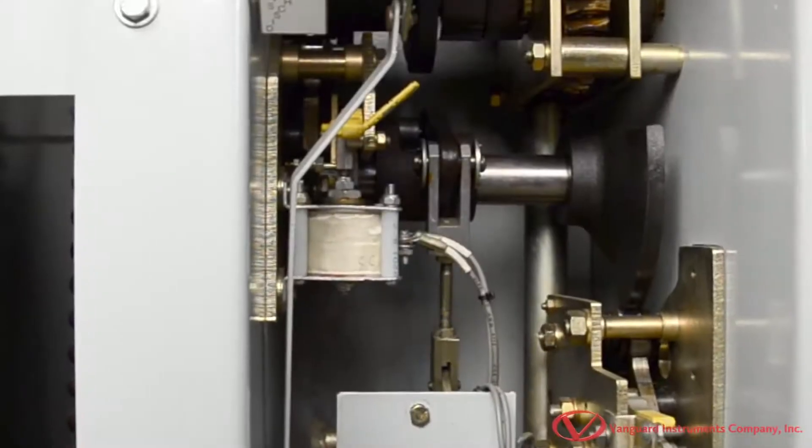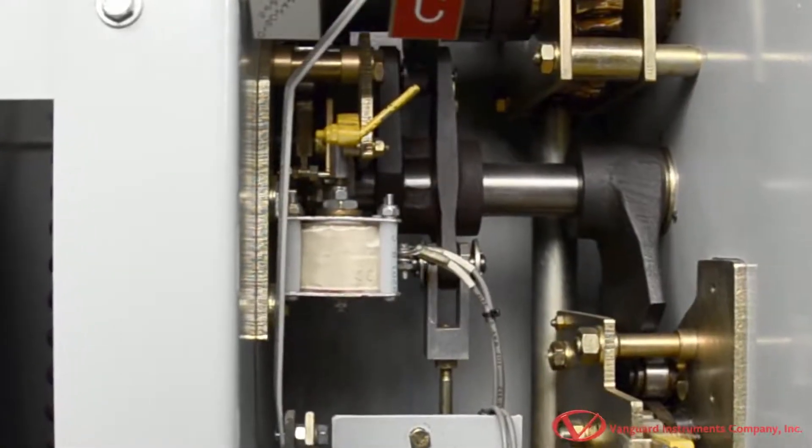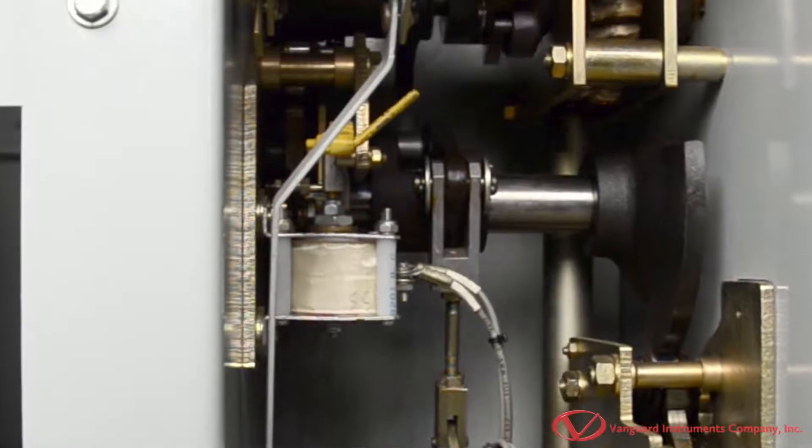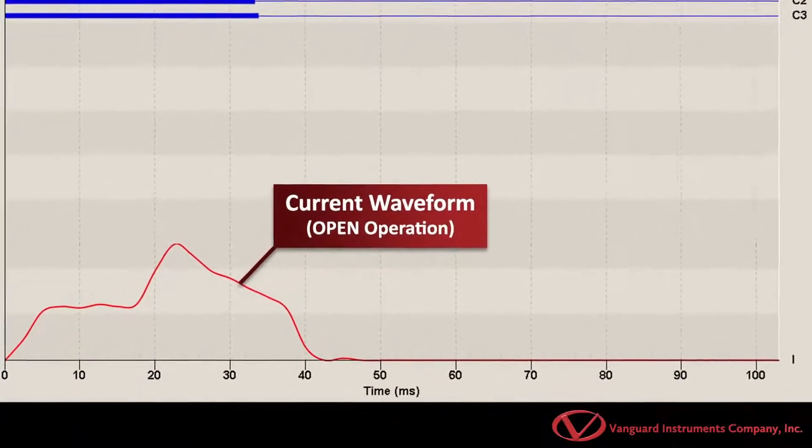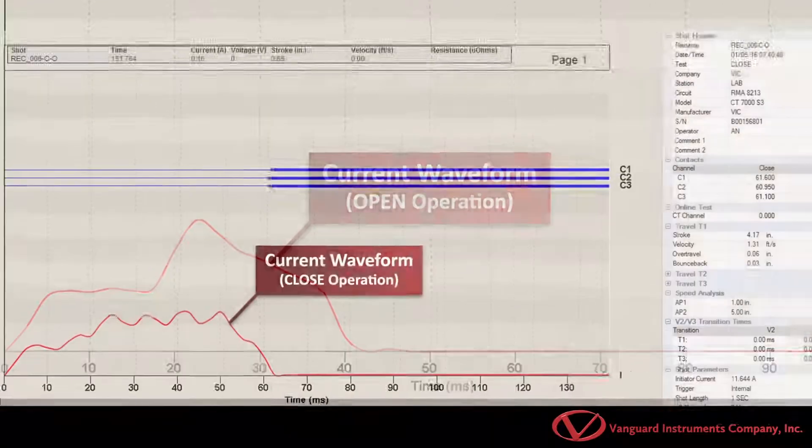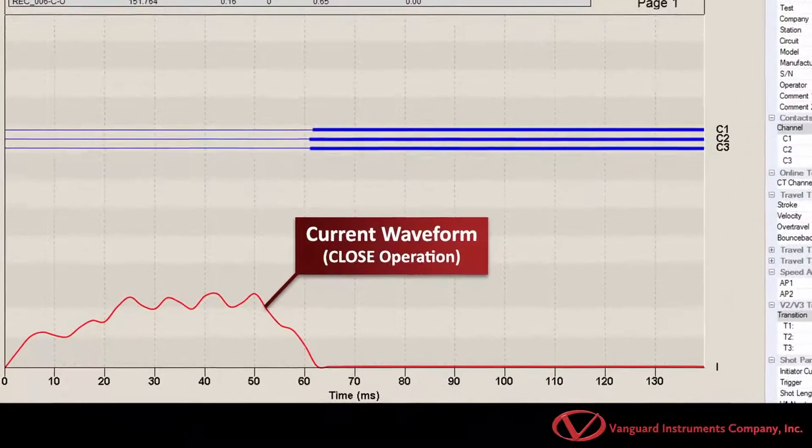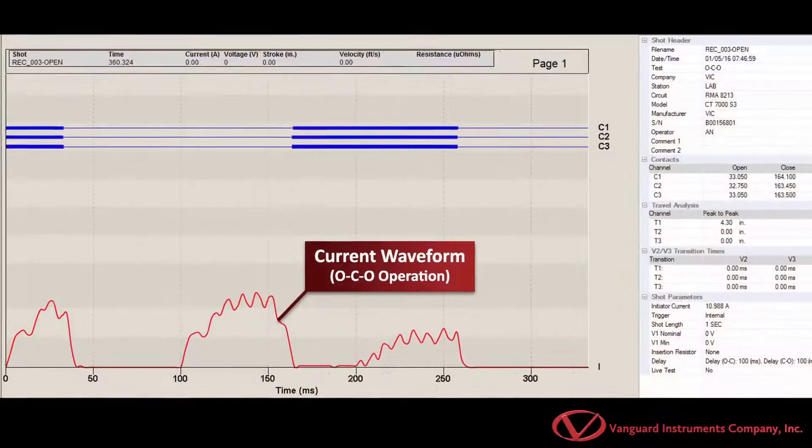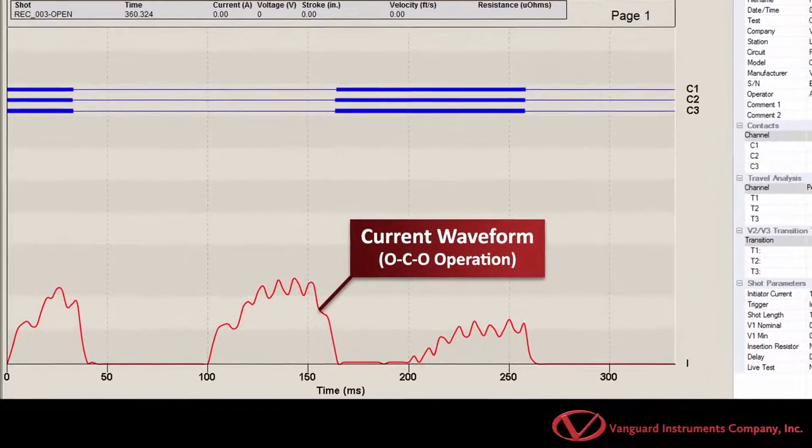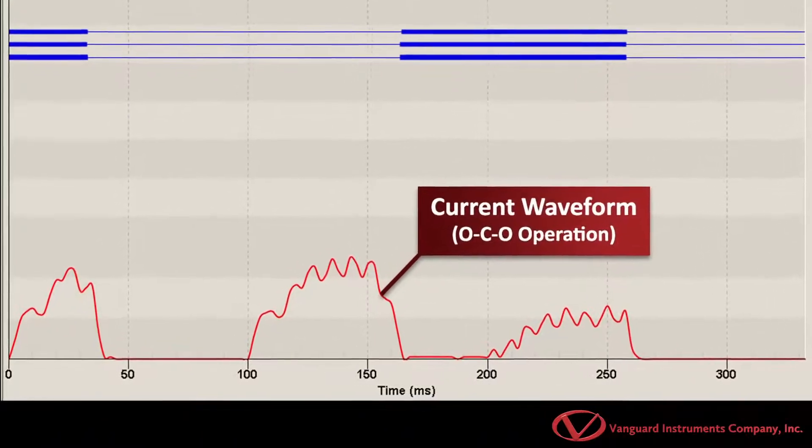A breaker's control circuit can also be tested by measuring the trip and close-coil current and the minimum pickup voltage. The measured values are then compared with the manufacturer's specifications to ensure optimal performance. The operating coil's current waveform provides insight into the mechanical and electrical condition of the operating coils. Any significant changes from the benchmark test signature should be further investigated.